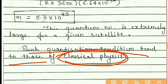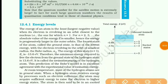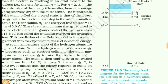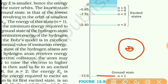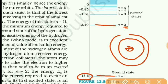Such quantization conditions tend to those of classical physics, meaning the result is related to classical mechanics. Now about energy levels of the electron in a hydrogen atom. In this figure, the electron in the ground state — that is, the innermost/lowest orbit — has energy −13.6 eV. In the second orbit (n = 2) it has energy −3.4 eV, and so on for 3rd, 4th, and 5th orbits.